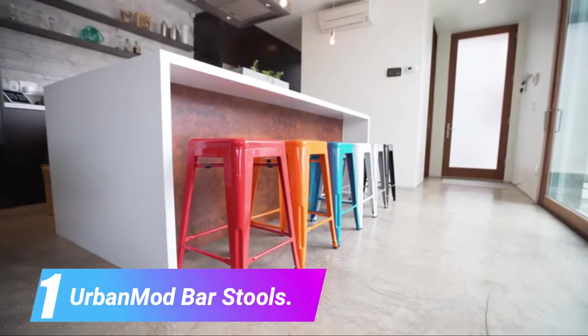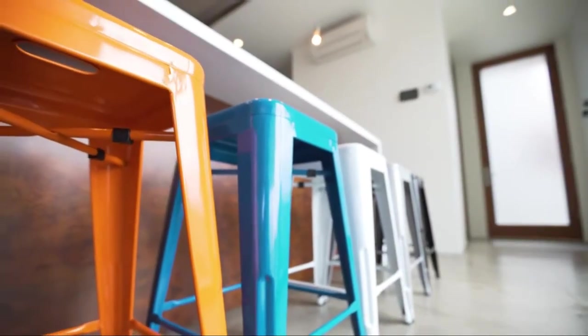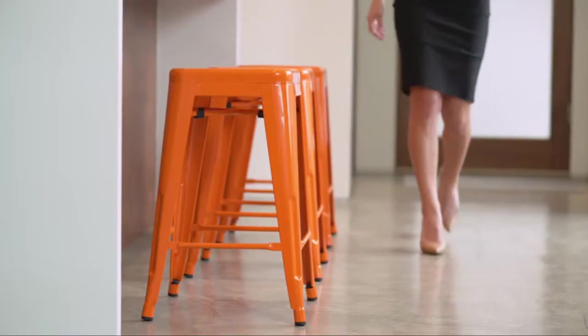Number one: Urban mod bar stools. With the help of galvanized steel along with glossy paint, you can be sure that the construction is pretty sturdy. The cross bracing ensures that the stability is on the higher side.